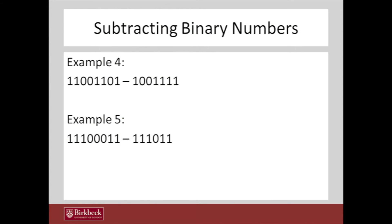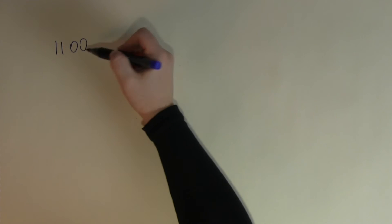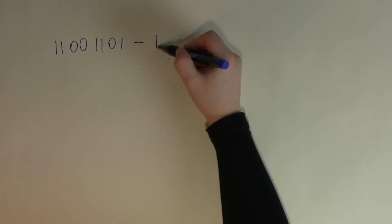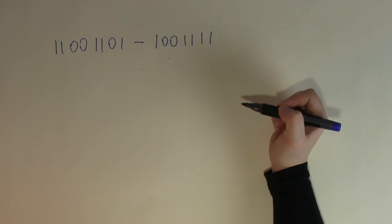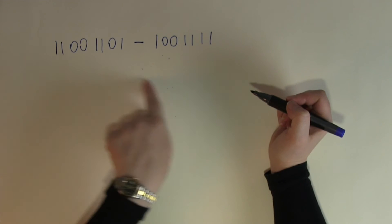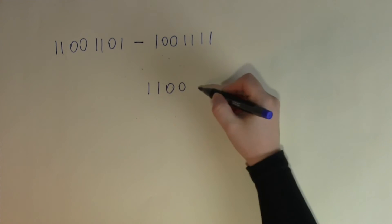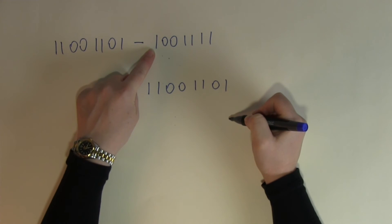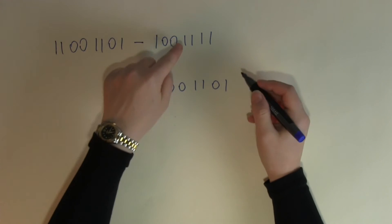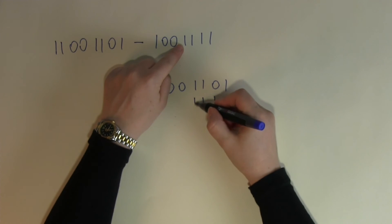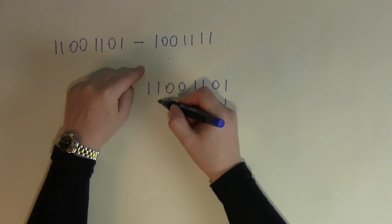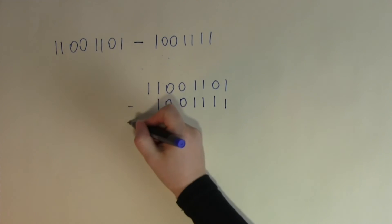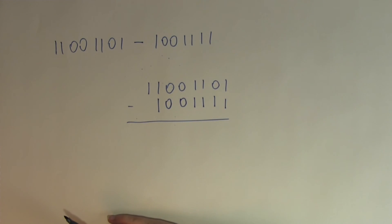The examples so far had the positioning already done correctly, but that's not always the case. If you are given a subtraction in a line format, you need to rewrite it. So for 11001101 take away 100111, you copy the first number on top and then copy the second number underneath, making sure you line it up correctly by starting from the right — so units under units, each place value under the matching place value. Otherwise the subtraction will be quite difficult to carry out.